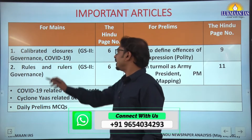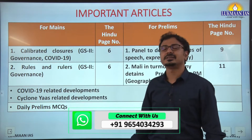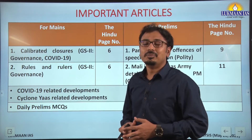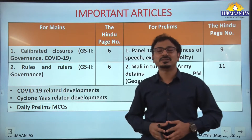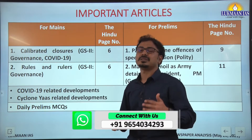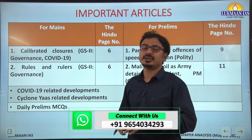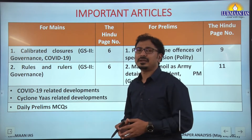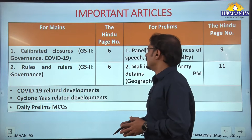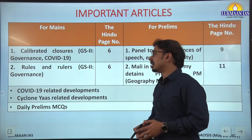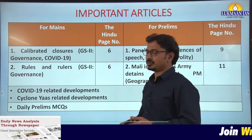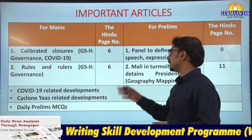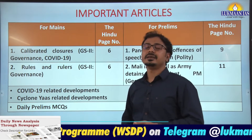First, 'Calibrated Closures' on page number six, editorial page. This editorial has the context of the need to bring changes in the pandemic policy of the government. What are the concerns or limitations in the pandemic policy dealing with the second wave of COVID-19? The article also provides a way forward.